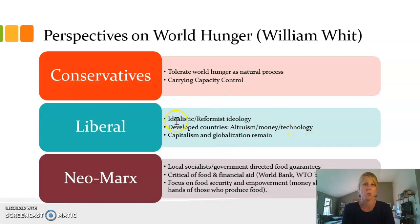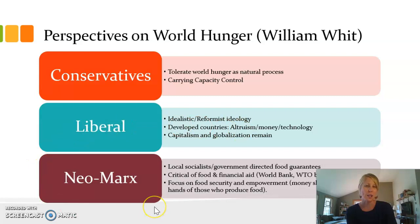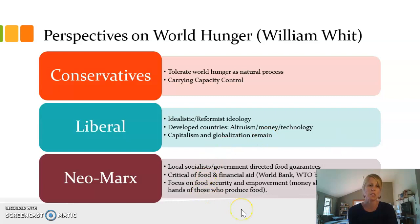Some people are skeptical about whether existing systems can remain in place and simultaneously fight world hunger. Lastly, there's the neo-Marxist perspective, which argues that local governments, operating from a more socialist orientation, need to direct food distribution to ensure populations are fed. This perspective is very critical of food and financial aid, arguing that the World Bank and the World Trade Organization breed dependency. The focus instead is on food security and empowerment — that money should stay within the hands of those producing the food and should not leave the region or country where it's being produced.